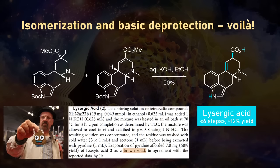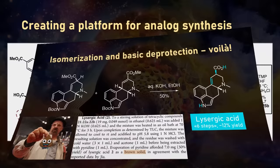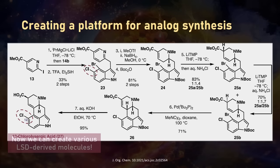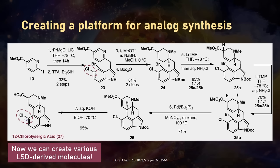Lastly, they showed that this synthetic route could be useful to explore and study LSD analogues. Remember the methoxy-substituted DMT structures at the start? They started with a chloro-substituted indole starting material and replicated all the reactions, including the Heck, to create a C12 chlorolysergic acid derivative. You could envision creating different LSD analogues by converting the aryl chloride into other functional groups such as methoxy groups, which might help scientists find future drugs based on lysergic acid with differentiated therapeutic profiles.